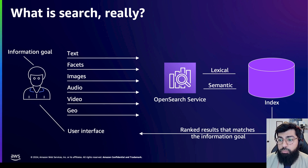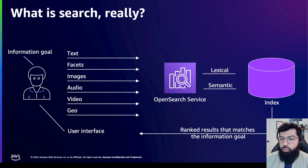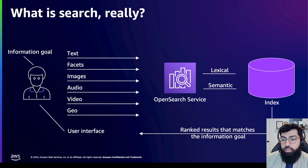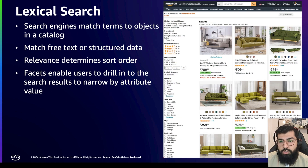It can either do it through a lexical search or through a semantic search. Lexical Search primarily works by matching exact words or phrases that appear in a query with those in the documents. Semantic Search works by using a machine learning model to interpret and match the meaning behind the words and phrases in a query with the interpreted meaning of the documents. You can use both lexical and semantic search in the same query in OpenSearch using hybrid search.